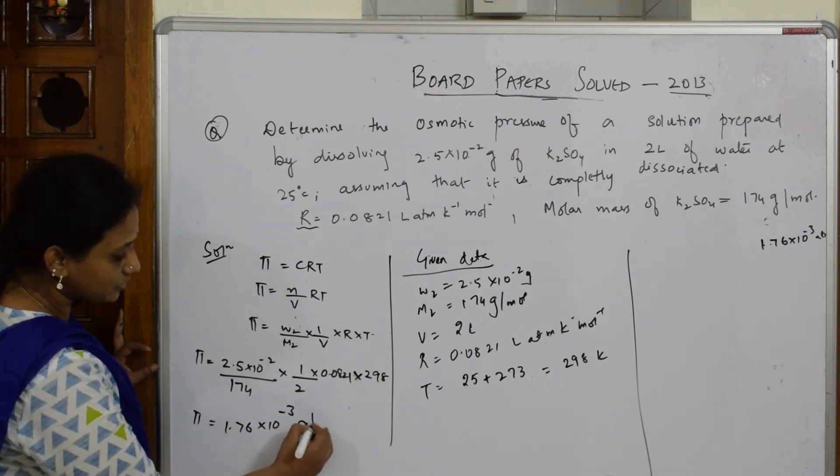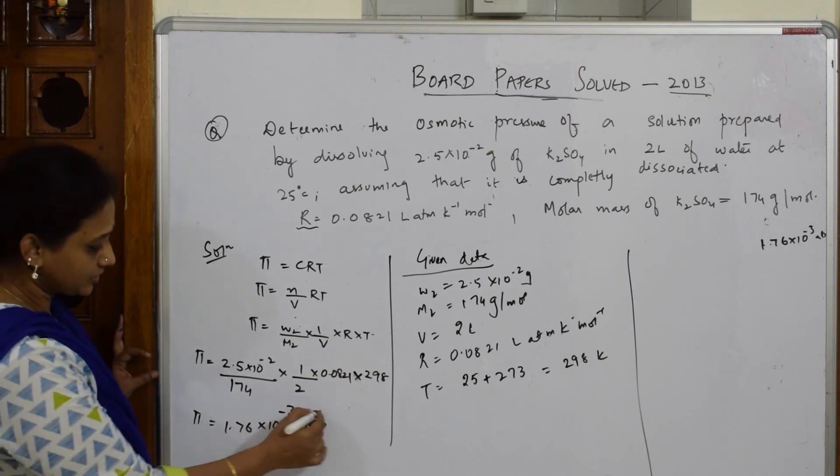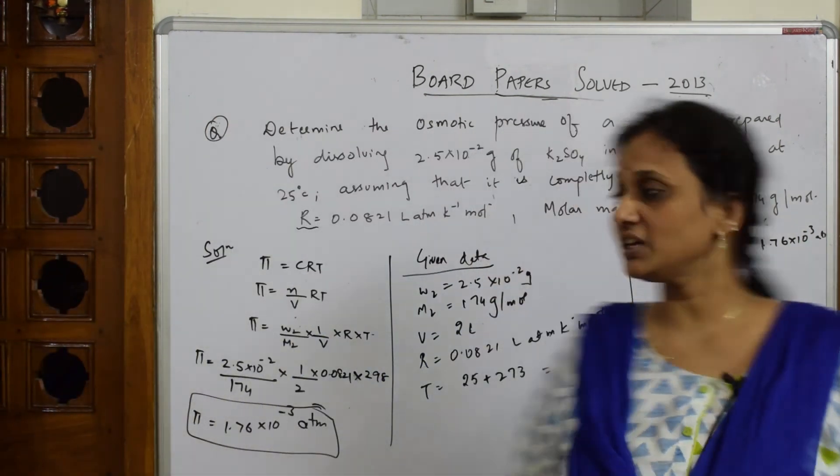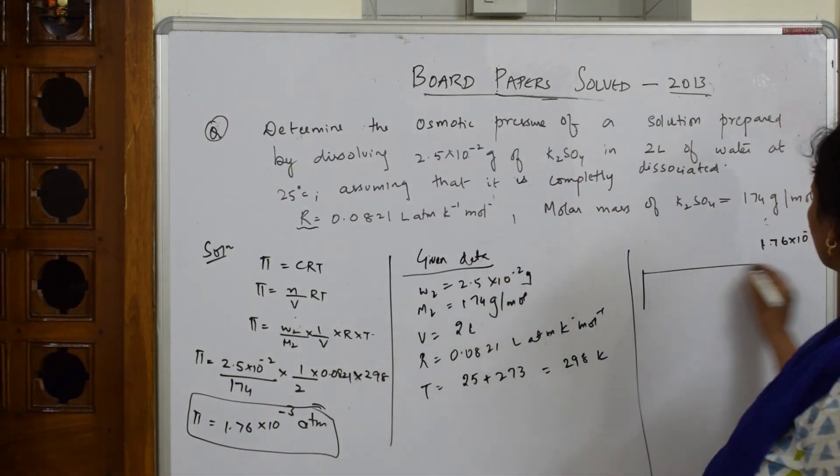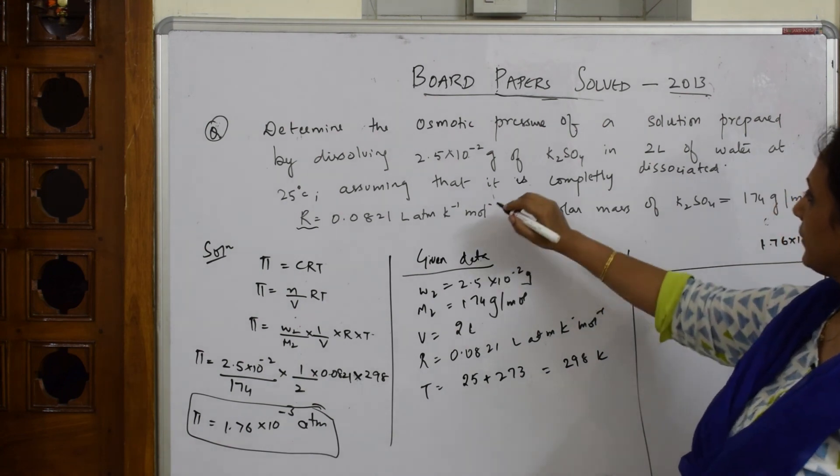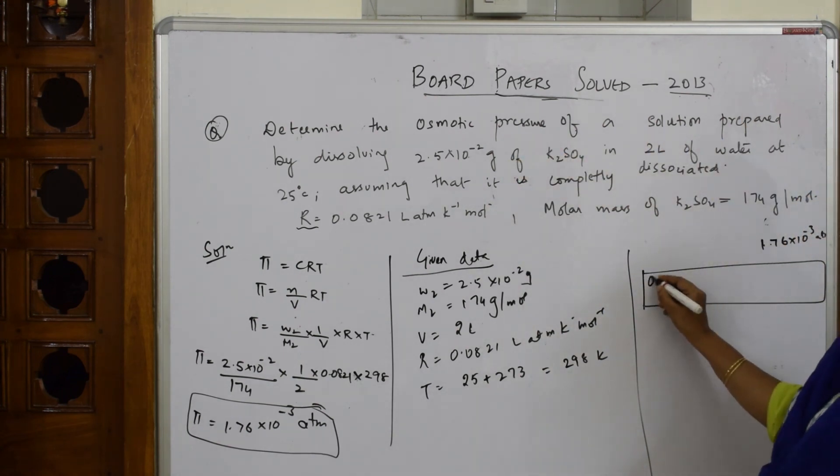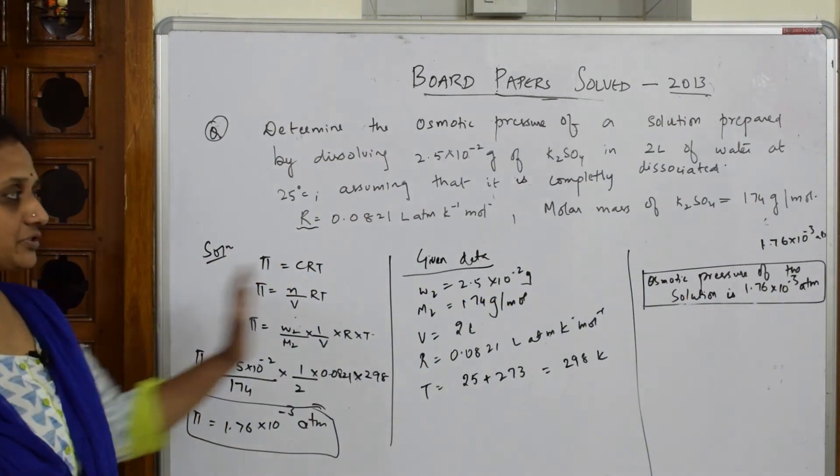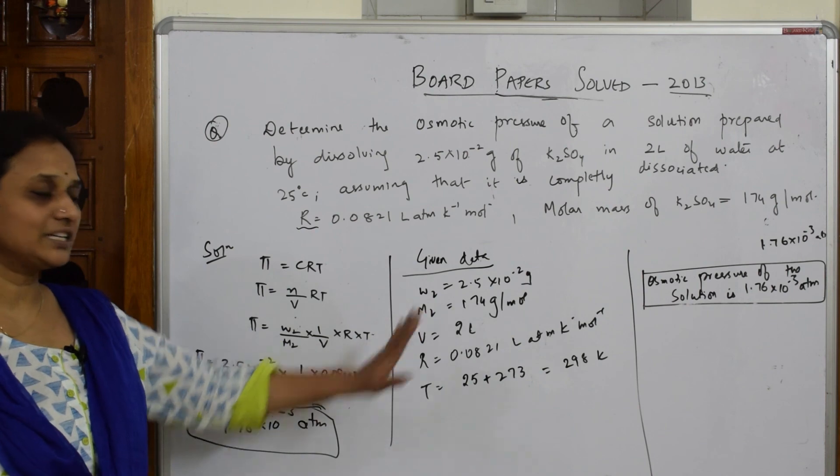So what are you going to do? You will find the answer, you will write it, and finally most important thing, you have to end your answer writing in this way. What do they ask me? Determine the osmotic pressure of a solution. So osmotic pressure of the solution is 1.76 × 10^-3 atmospheres. This is how you are going to write. This is a complete way of solving the numerical where you will be getting full three marks for this.